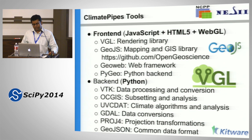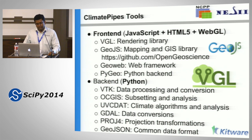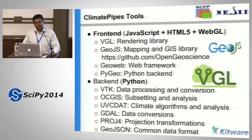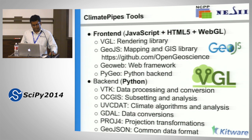On the backend, we have a corresponding Python backend for GeoJS called PyGeo. Some of the fundamental tools we use on the backend are VTK, developed by Kitware; Open Climate GIS, a NOAA project; UVCDAT, the DOE big initiative; and some other tools like GDAL and Proj4.